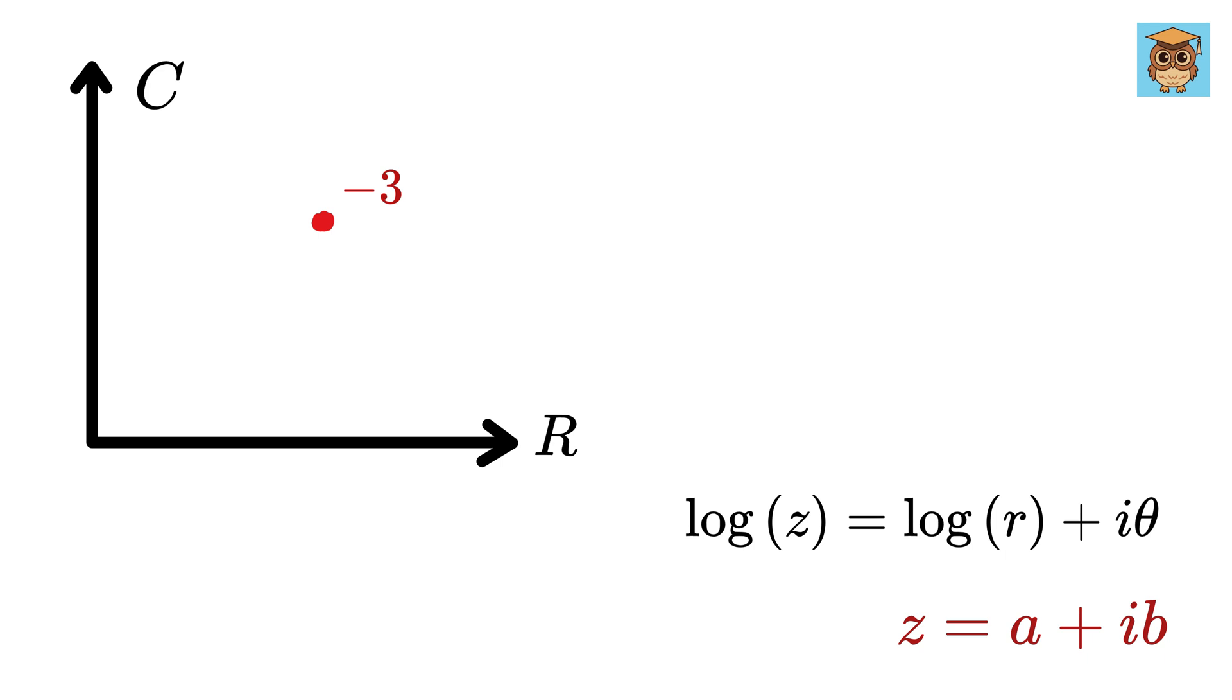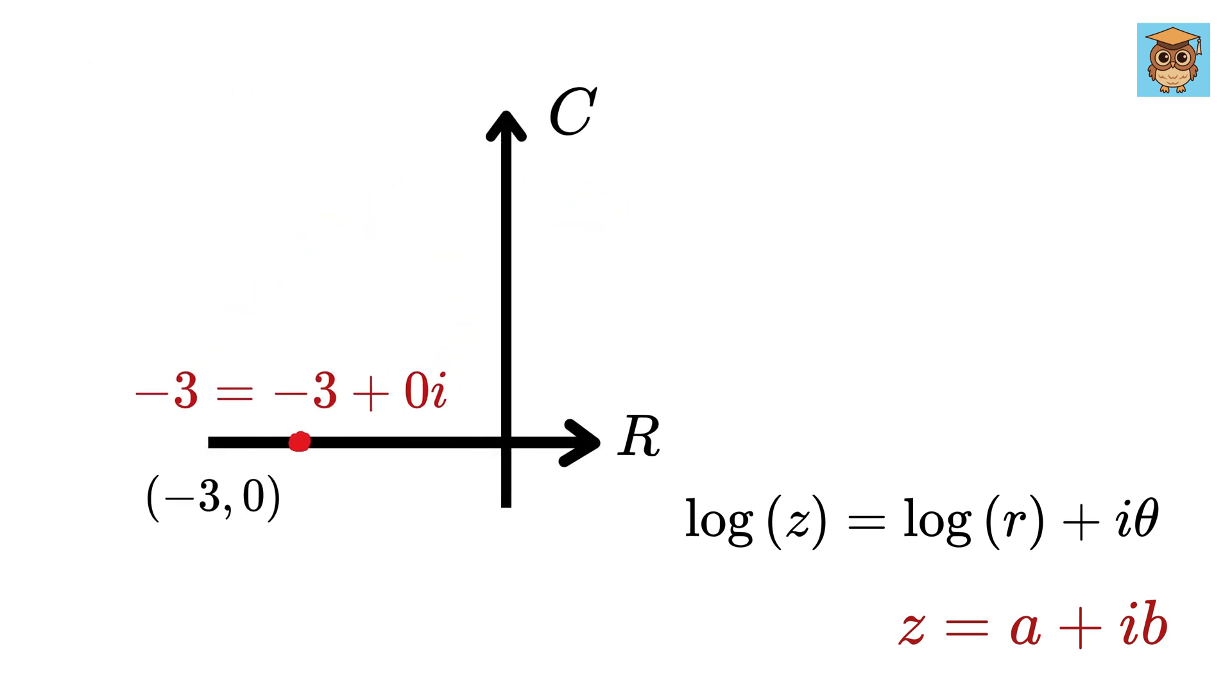Now, consider our point negative 3, which can be written as minus 3 plus i times 0, or minus 3 comma 0, where a is minus 3 and b is 0. It will be located here. So, what will be the value of r and theta? r will be this distance, or 3 in this case, right? And theta will be this angle, or 180 degrees, which in radian will be pi.